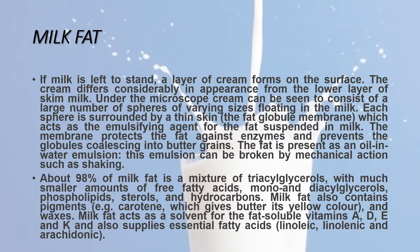First, let's talk about milk fat. If milk is left to stand, a layer of cream forms on the surface. It's called fat. The cream differs considerably in appearance from the lower layer of the skim milk. Under the microscope, cream can be seen to consist of a large number of spheres of varying size floating in the milk. Each sphere is surrounded by a thin skin called the fat globule membrane, which acts as an emulsifying agent for the fat suspended in milk. The membrane protects the fat against enzymes and prevents the globules from forming into butter grains. The fat is present as an oil-in-water emulsion.